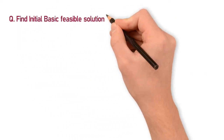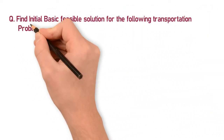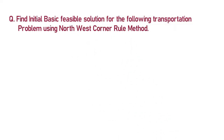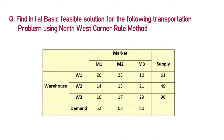Now we will see how to solve an actual transportation problem using the Northwest Corner rule method. In this problem, different markets and warehouses are given. Markets are M1, M2, M3 and warehouses are W1, W2, W3, with corresponding supply and demand values.